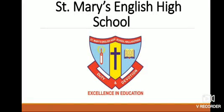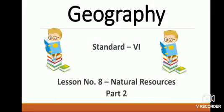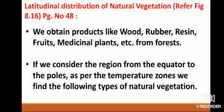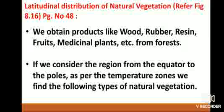Welcome, dear children. Geography, Standard 6, Lesson Number 8: Natural Resources, Part 2. For the latitudinal distribution of natural vegetation, refer to Figure 8.16, page number 48 of your textbook. We obtain products like wood, rubber, resin, fruits, medicinal plants, etc. from forests.